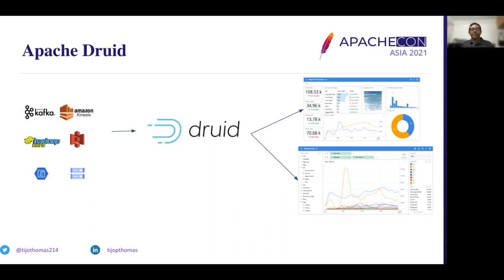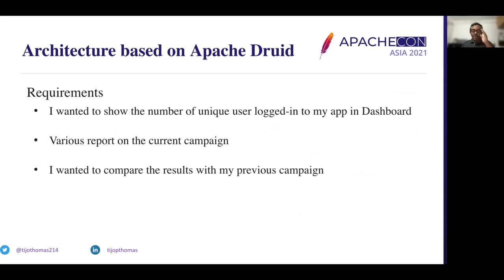Druid has the capability to ingest data from a streaming platform. As soon as data is ingested — which takes a few milliseconds — it is available for query, ensuring data freshness. Reviewing this architecture against my use case: I can query and get the number of unique users logged into my app; I can query various reports on my current campaign since data is readily available once ingested; and I can compare reports with my previous campaign as the data is in the same Druid cluster. Druid provides a single view of real-time data and batch data — I don't need to worry about which is real-time and which is batch.